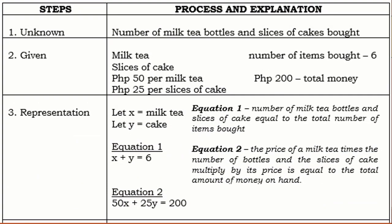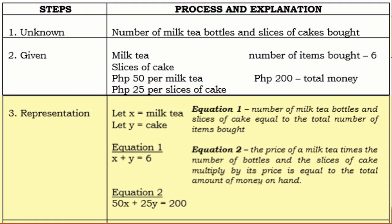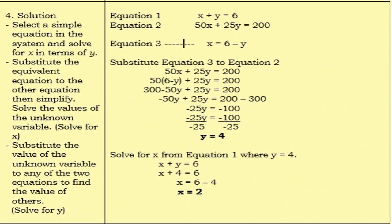Solving by substitution method. Again, identify the unknown, the given, and represent. Now let us solve. First, select the simpler equation in the system and solve for X in terms of Y. The simpler equation is equation 1, so we express it as X is equal to 6 minus Y. Now substitute this equivalent equation into the other equation, then simplify. We are going to substitute equation 3 into equation 2.